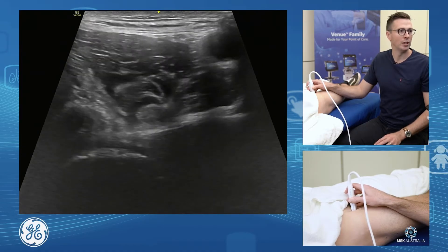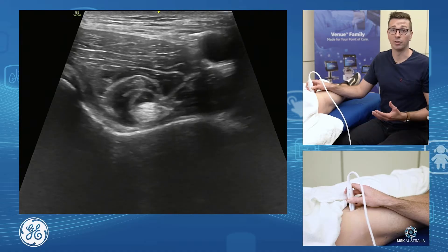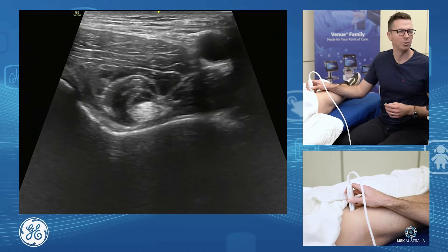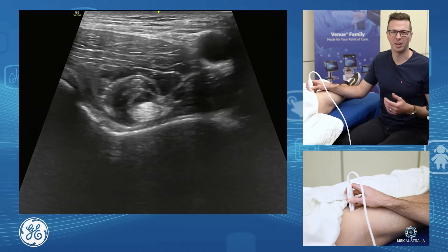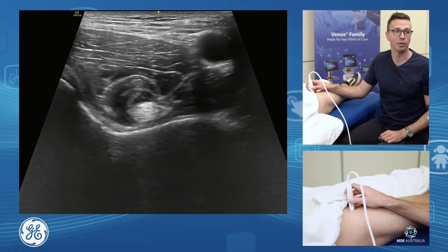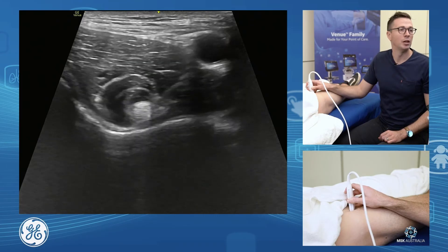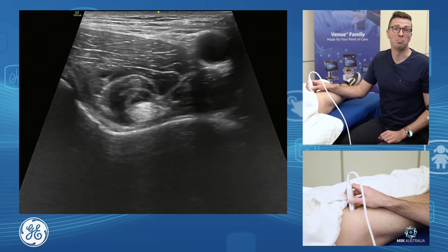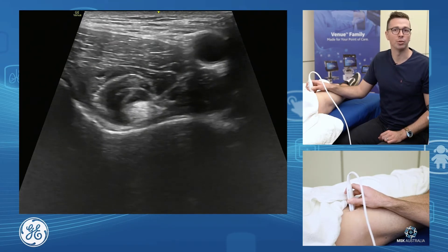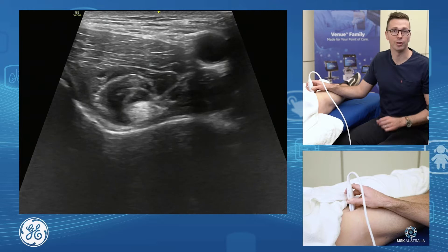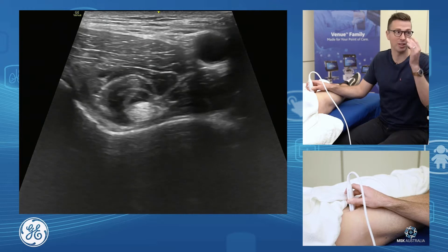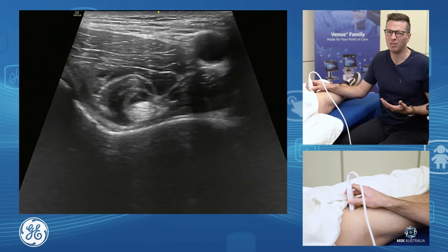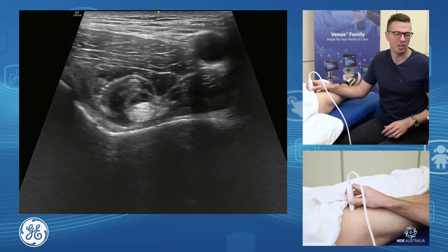This is where we look for iliopsoas bursitis, which is often secondary to hip joint pathology itself. Remember that the iliopsoas bursa, in most cases, is contiguous with the hip joint itself. So if you're doing an iliopsoas bursal injection, you're really doing a hip joint injection.